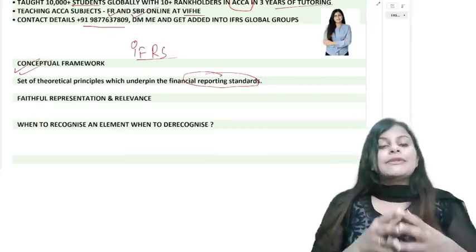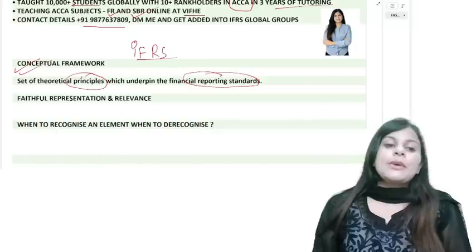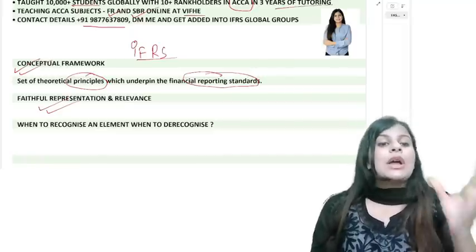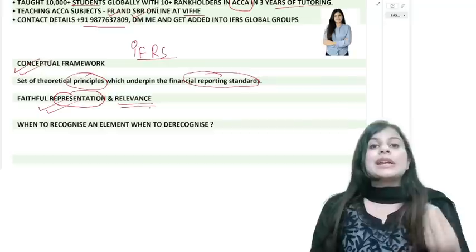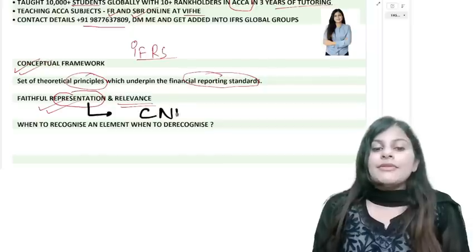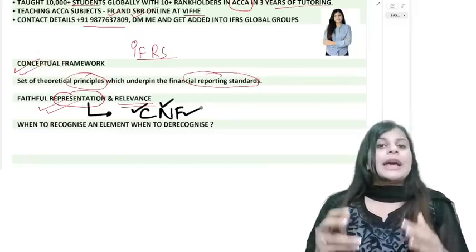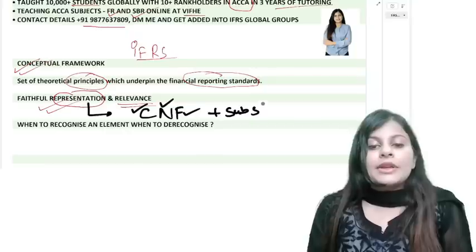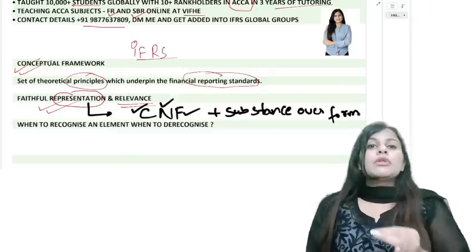To set any language, we need principles on which our standards are based. We should always present information in our balance sheet, P&L, OCI, or cash flow that gives faithful representation and relevant information. Faithful representation means CNF — Complete, Neutral, and Free from error. It also includes substance over form.